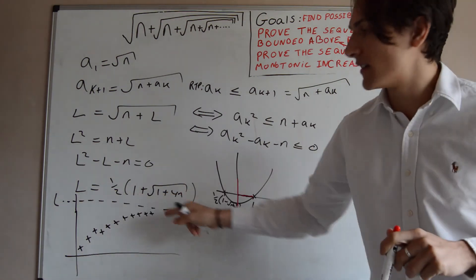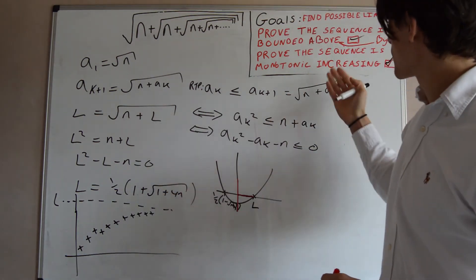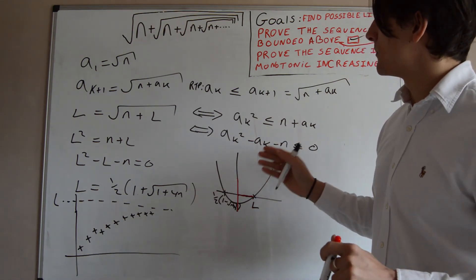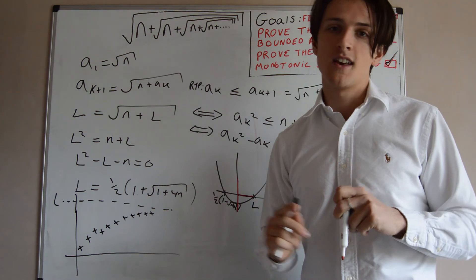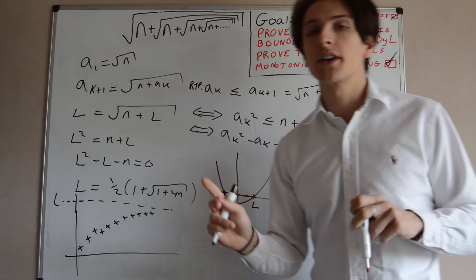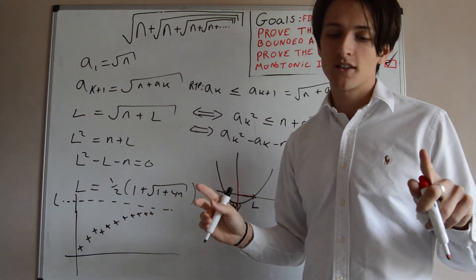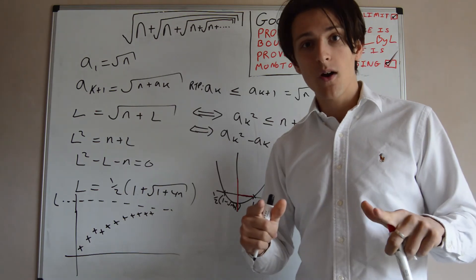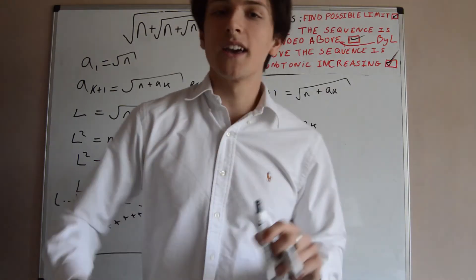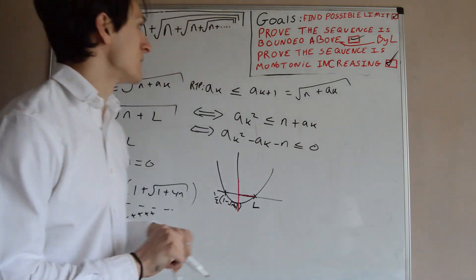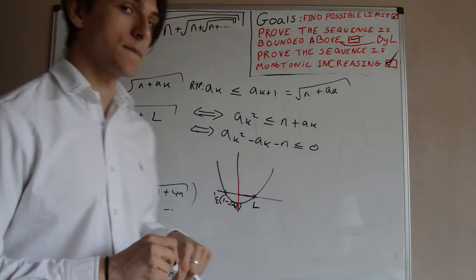We've shown the sequence is bounded above by L and is monotonically increasing. So by the theorem of convergence, the possible limit is the true limit — and we've proved that rigorously. This is a really cool result. If you plug in n = 1, you get the golden ratio. The limit becomes ½(1 + √5) ≈ 1.618, and the animation shows the aₖ values beautifully converging to that limit. That's everything — thank you for watching. I'll see you next time.